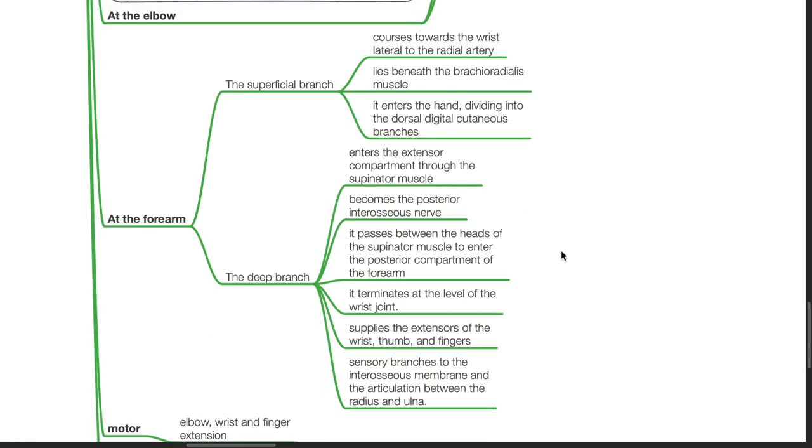The deep branch enters the extensor compartment through the supinator muscle and becomes the posterior interosseous nerve. It passes between the heads of the supinator muscle to enter the posterior compartment of the forearm. It terminates at the level of the wrist joint and supplies the extensors of the wrist, thumb and fingers. Sensory branches to the interosseous membrane and the articulation between the radius and ulna arise from the deep branch as well.